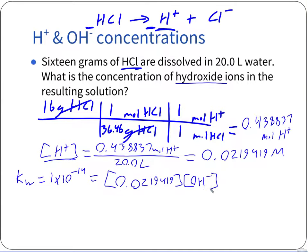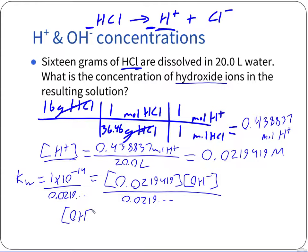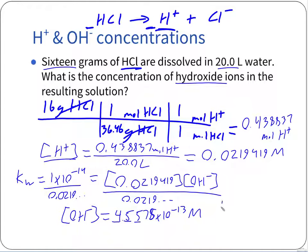Solving for [OH⁻] concentration, we divide both sides by 0.0219419. We get a hydroxide concentration of about 4.5575×10⁻¹³ molar — an extremely tiny concentration. Checking sig figs: 16 is exact, 20.0 has three sig figs, so we want three sig figs. The final concentration of hydroxide ions is 4.56×10⁻¹³ molar.